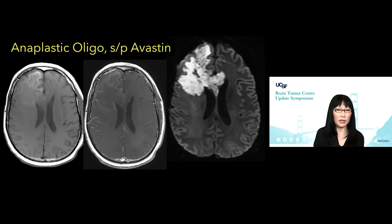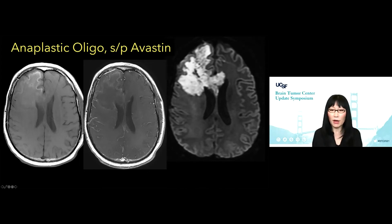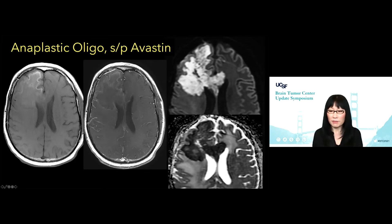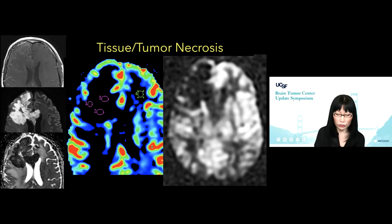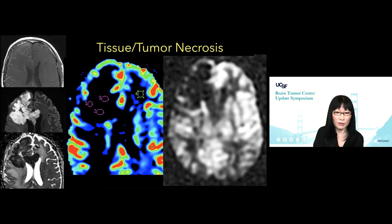How about this patient? Patient had anaplastic oligo and received Avastin. Is this a tumor or what is this on DWI? Here's the ADC map to prove this is true reduced diffusion — we see this quite often post-Avastin therapy. But once we add perfusion, we know that there is no vascularity there. This is a dead brain tumor — tumor necrosis that is completely void of blood flow or blood volume in that region.